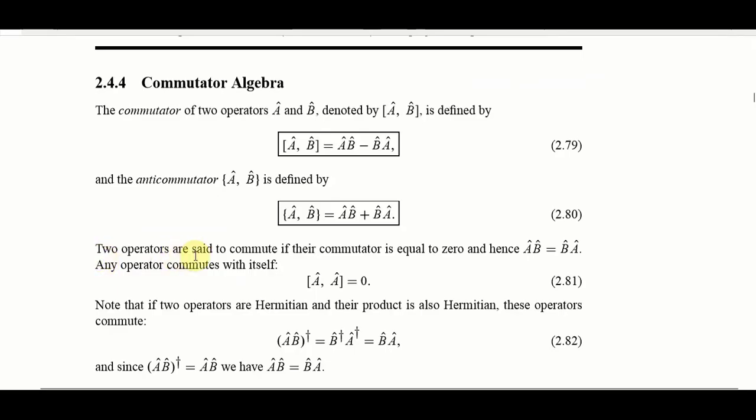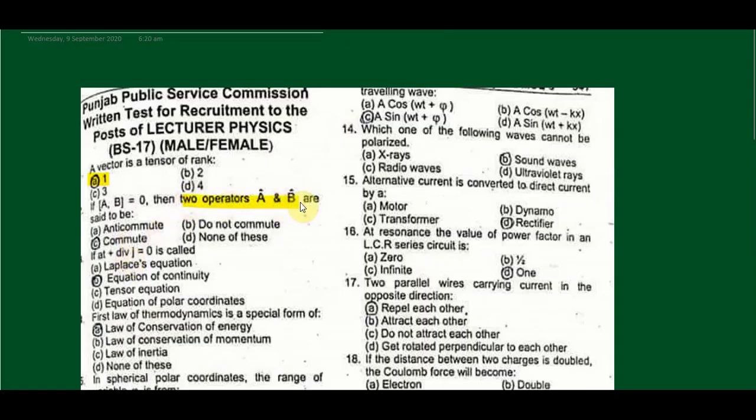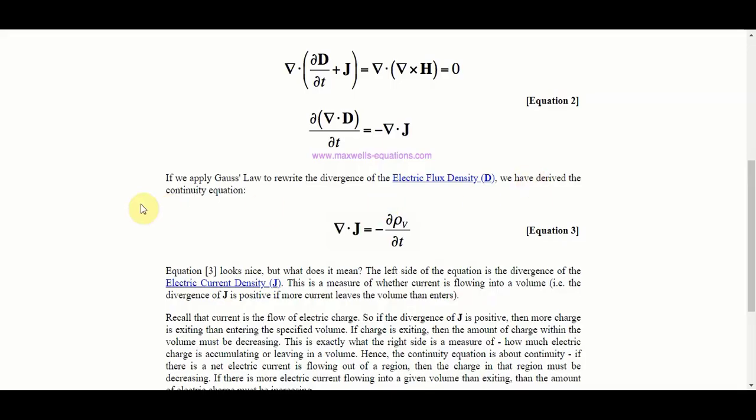Do operators commute when their commutator is equal to zero. So two operators A and B, when their result is equal to zero, then they will commute. C will be the best option. This equation is the differential equation of equation of continuity. The differential equation of equation of continuity is in front of you. Besides this, Maxwell's differential equations and integral forms you should remember.